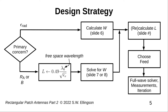Here's a summary of the design process. We enter from the left and ask: what is our primary concern? If we wish to optimize radiation efficiency — epsilon sub rad — then we follow the top path. Radiation efficiency is determined by W. Once we have W, we calculate L, which requires accounting for the radiating fringing fields. After that, one will normally choose a feed, and then enter into an iterative process requiring some combination of electromagnetic simulation — a full wave solver — and/or measurements. The purpose of this iterative final step is to improve our final choices for W and L, accounting for all the things we have neglected, including the effect of the feed.